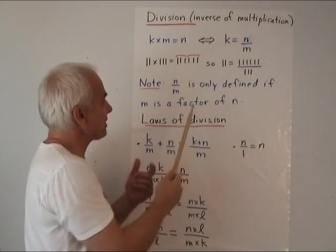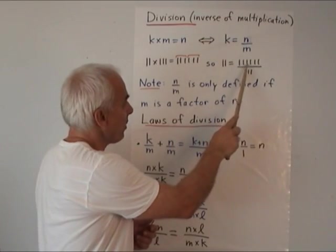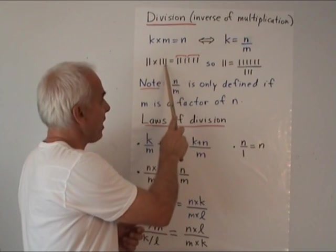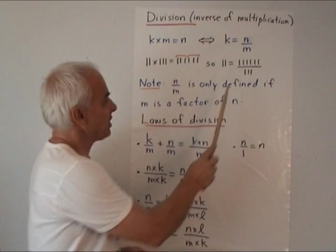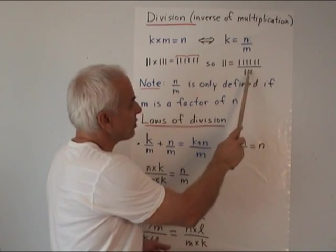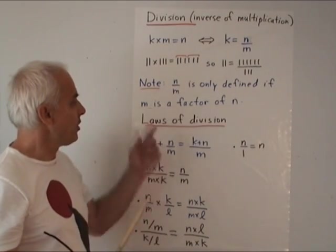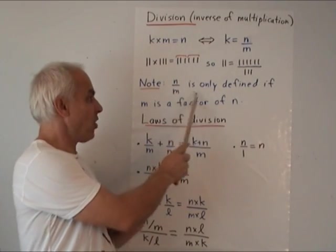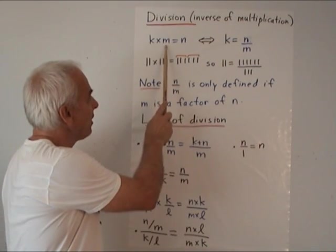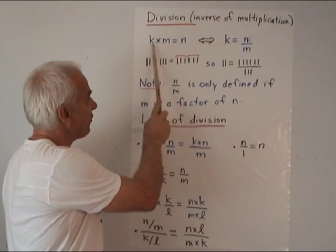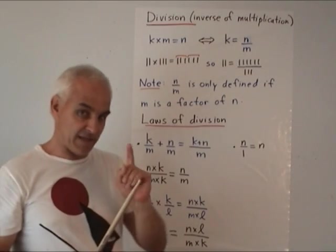Inverting that: if we take this number and ask how many groups of three are in it, the answer is two. So six divided by three is two, telling us that the number of groups of three in here is two. Note: N over M is only defined if M is a factor of N — we require that M is a factor of N so that we can write N as K times M; otherwise this division is not allowed.